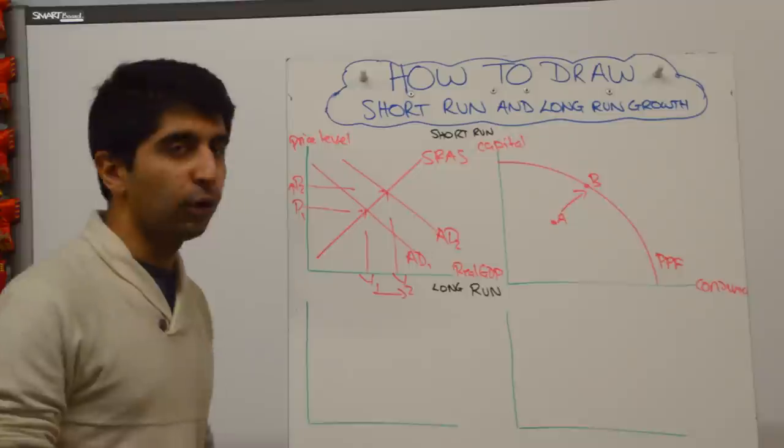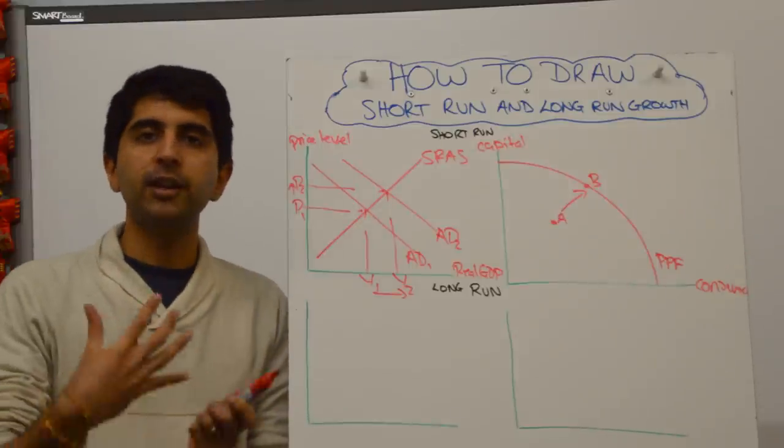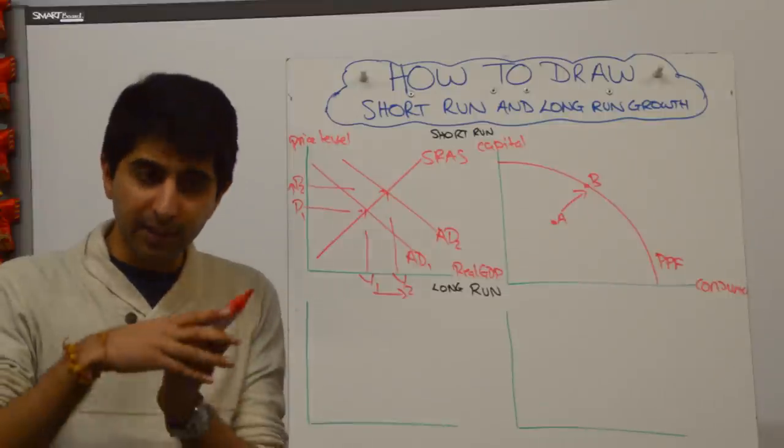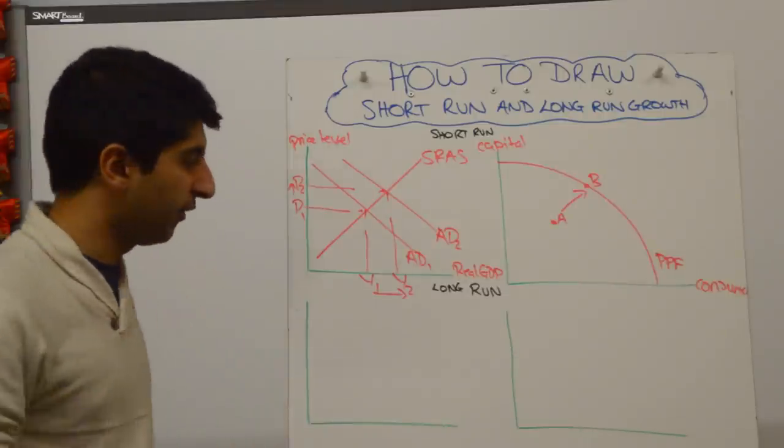What about long-run growth? Long-run growth is an increase in the quantity and quality of factors of production, which leads to an increase in the full employment level of output. It's an increase in potential growth of the economy.